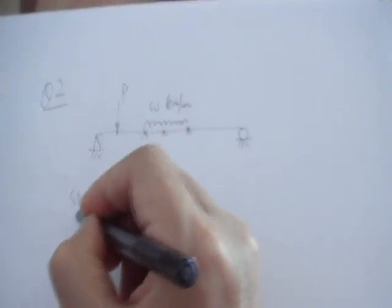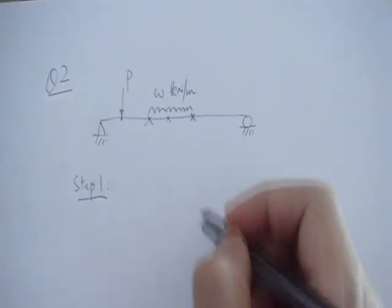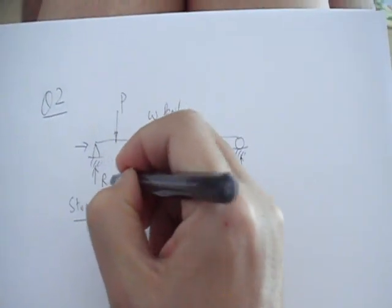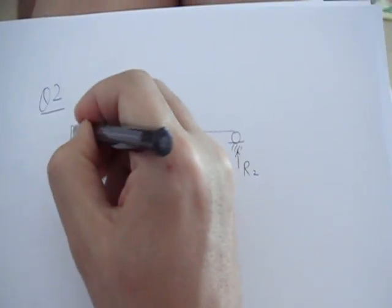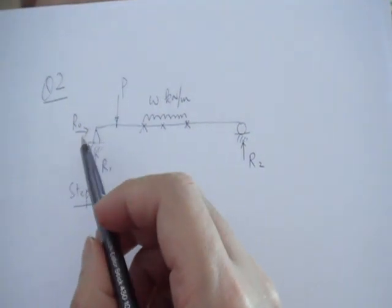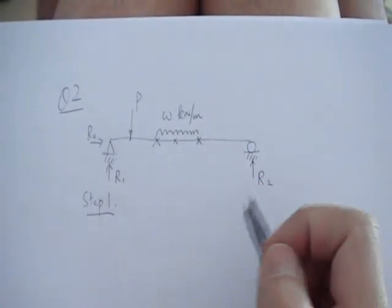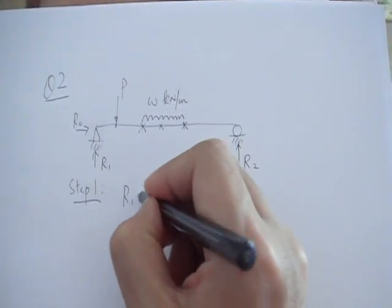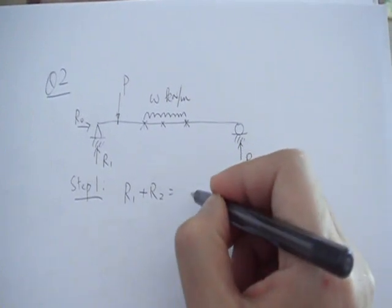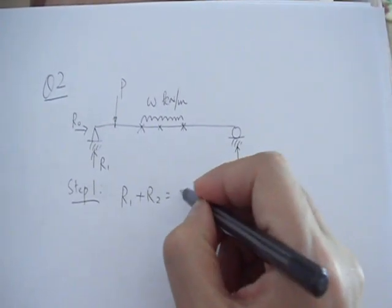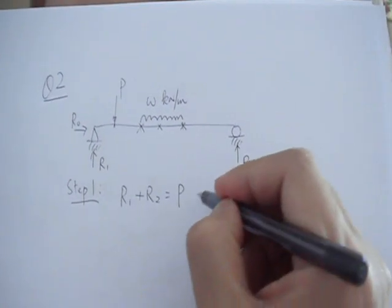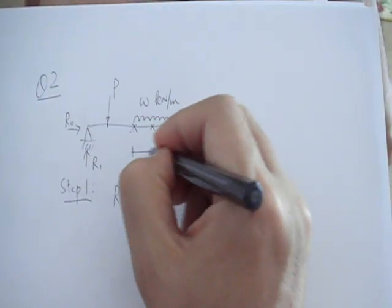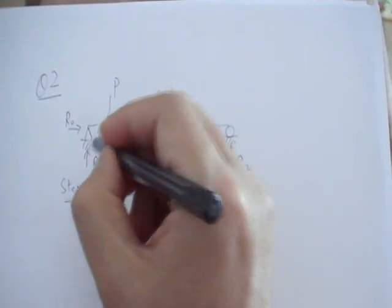Step one, as usual, you calculate the reactions R1 and R2. The horizontal reaction is obviously zero because there is no horizontal force acting on the beam. Vertical equilibrium tells you that R1 plus R2 going up is balanced by something coming down: P plus this little w times the length here, which is L over 3.